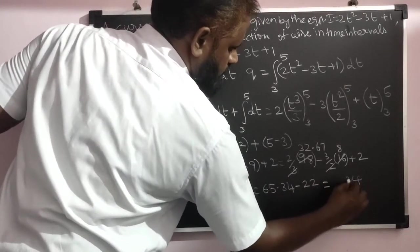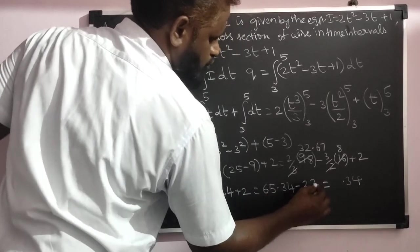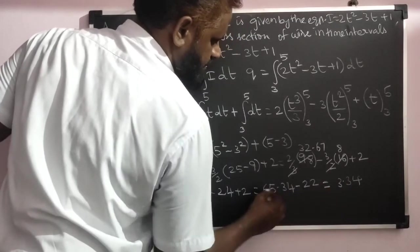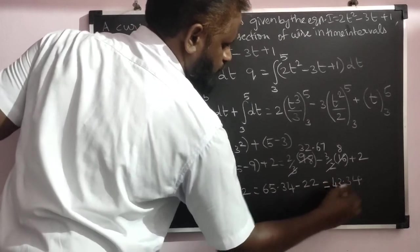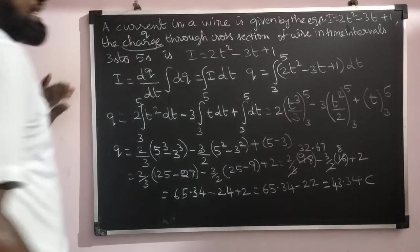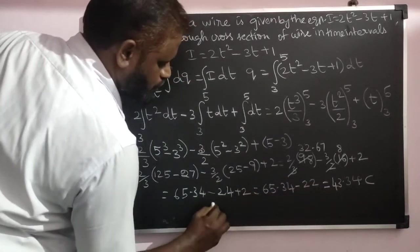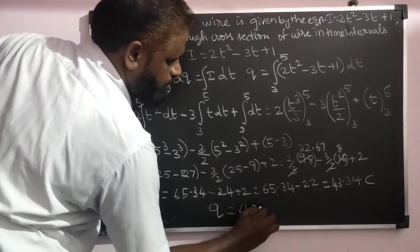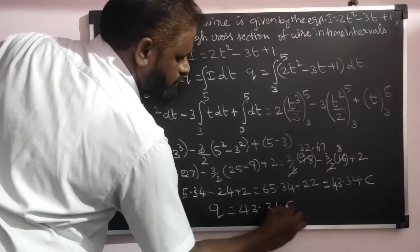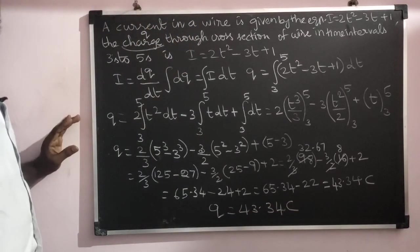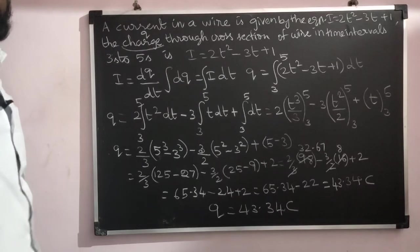So the charge passing through the cross-sectional area is q = 43.34 coulombs. Thanks for watching everybody, thanks all of you.